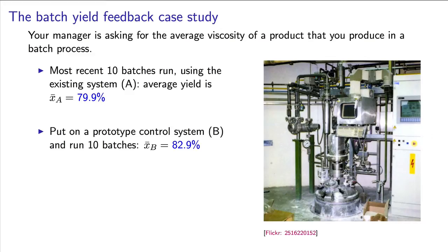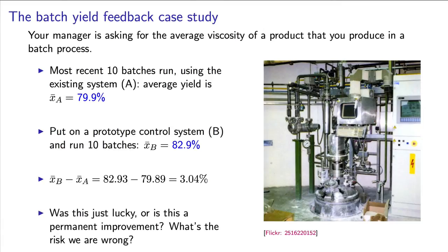After the 10 tests are finished, the average of these 10 new runs is 82.9%. That seems to be an improvement of about 3.04%. That improvement, if it is real and not due to luck, will cover the costs of the new controller and make some profit for the company.